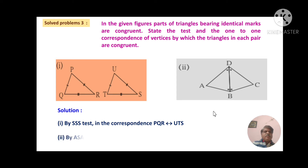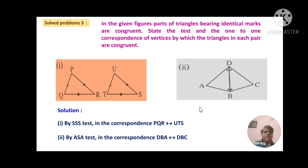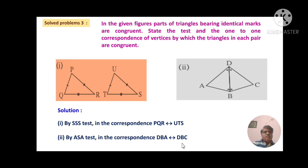For the second pair, angle D in triangle ABD is congruent with angle D in triangle BCD. Angle B in triangle ABD is congruent with angle B in triangle BCD, and BD is common to both. Therefore the correspondence is DBA to DBC, and these two triangles are congruent by the angle-side-angle (ASA) test.